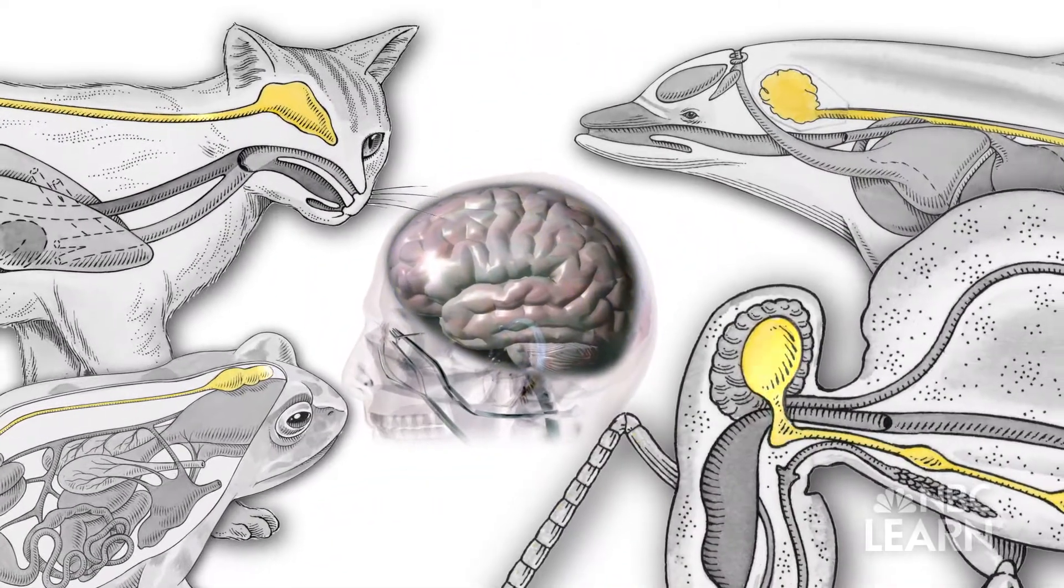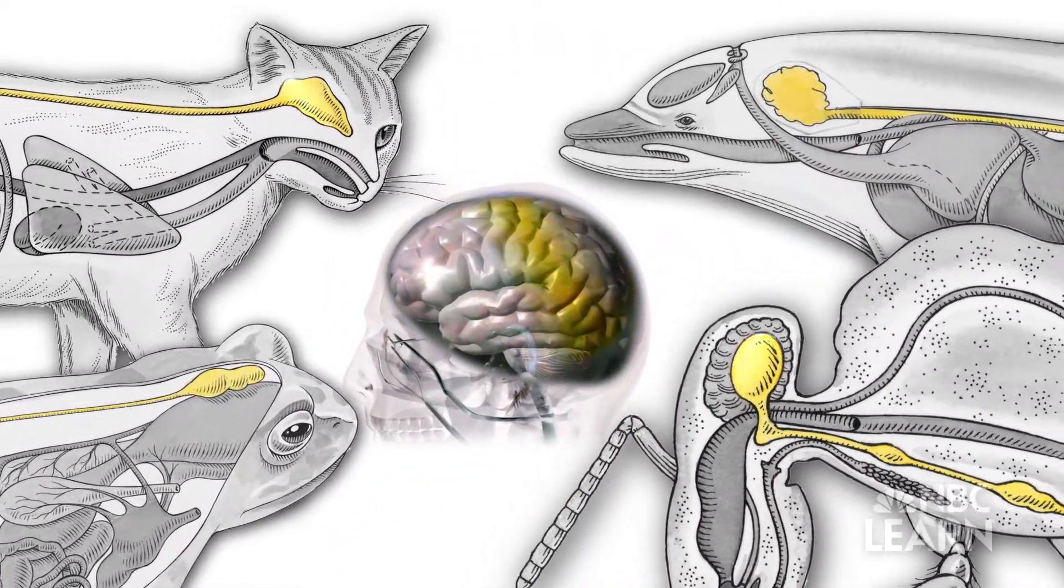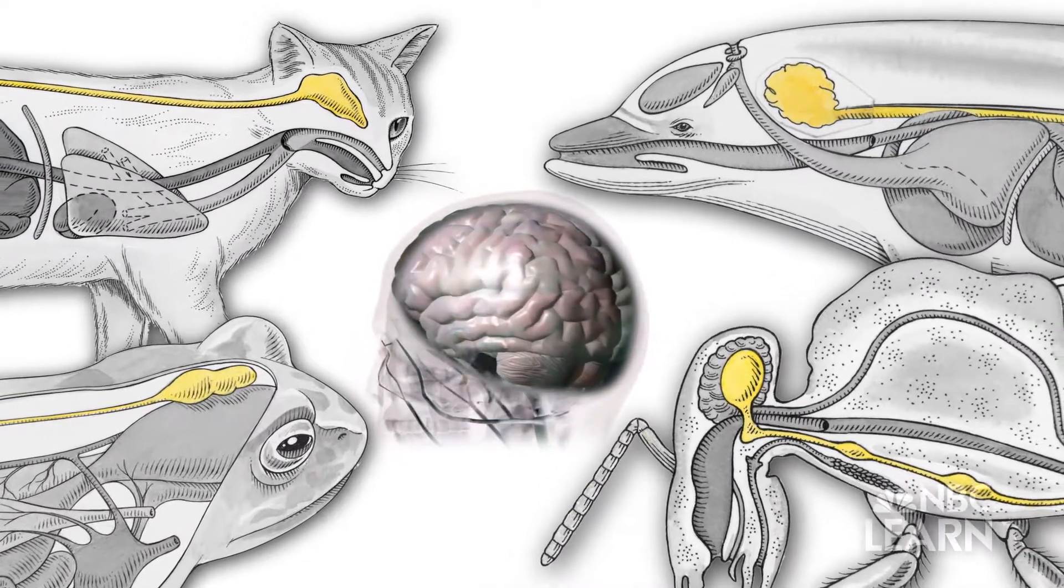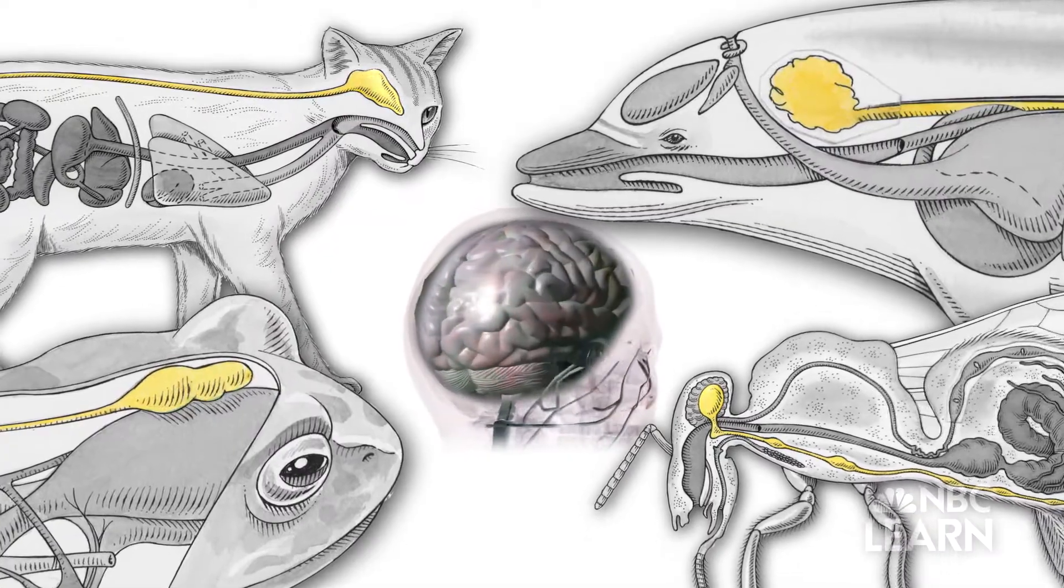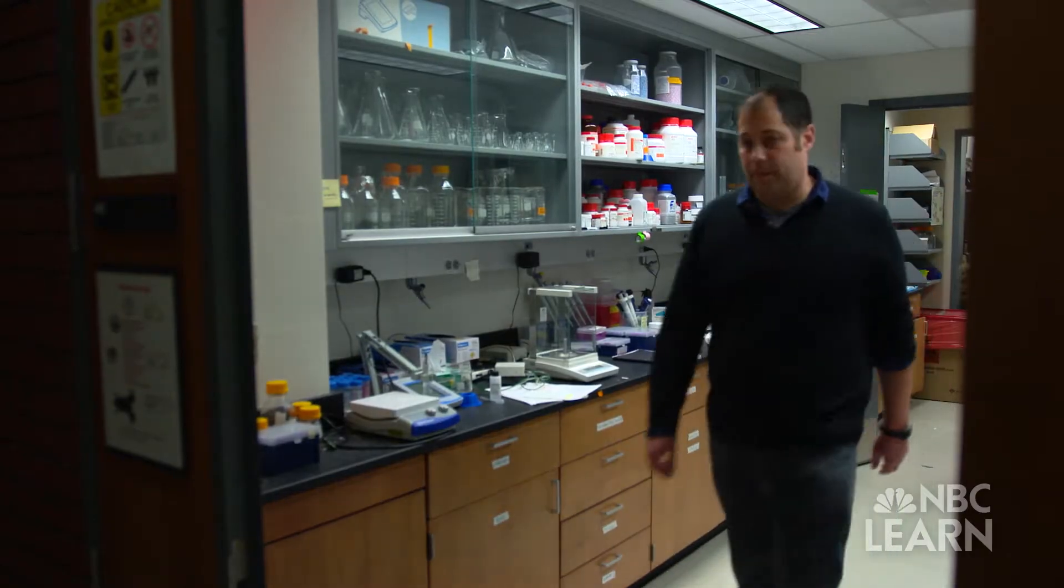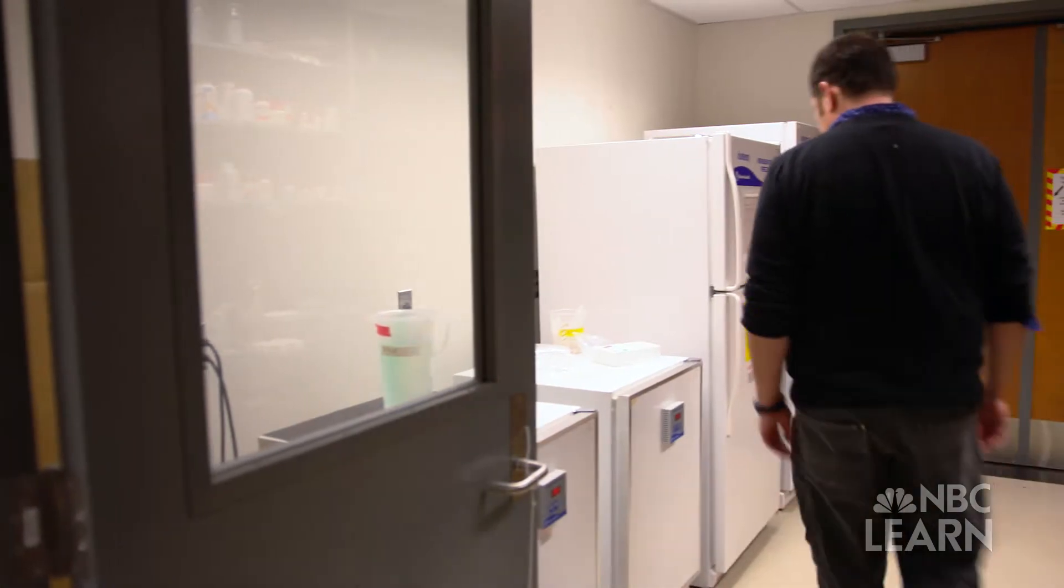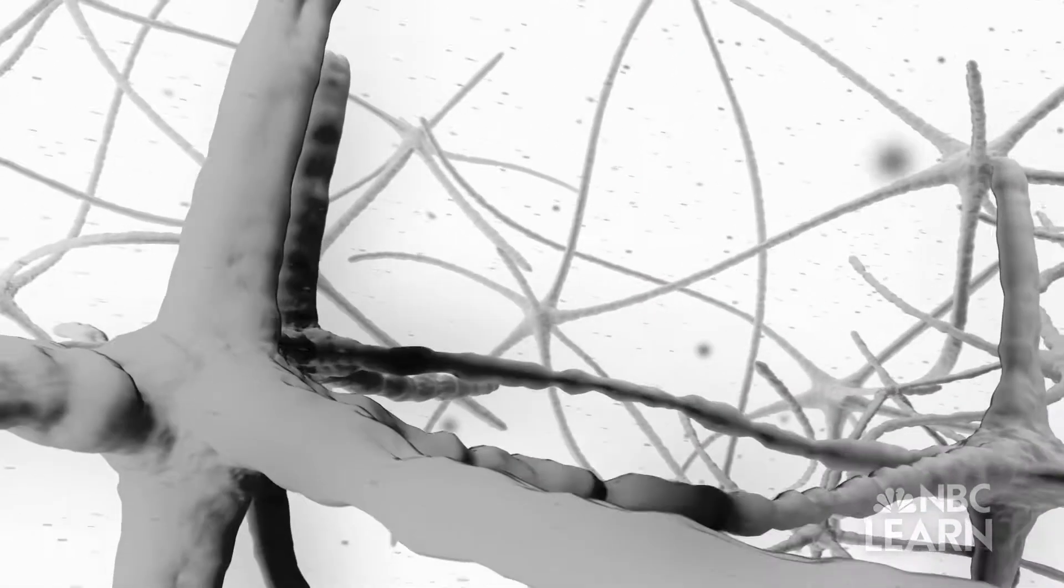Although different species have brains of varying shapes and sizes, the formation of all brains and their neural circuits follow similar developmental principles. It's vital to study brain development in order to understand normal development but also abnormal development. Carlos Eisenman, a neuroscientist at Brown University funded by the National Science Foundation, is trying to understand the basic biology of how neural circuits develop.